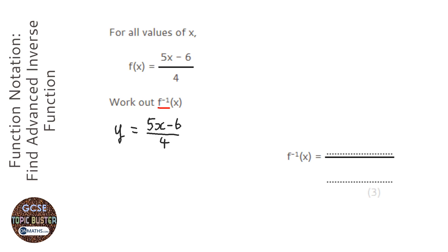And secondly, replace all the x's for y's and y's for x's. Just swap them all around. So it becomes x equals 5y minus 6 over 4.